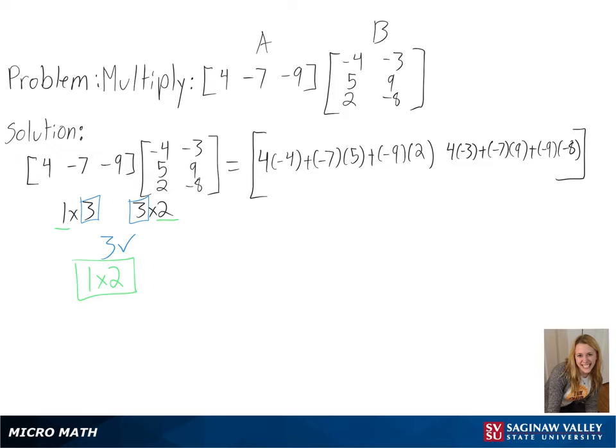Since all of our rows and columns have been multiplied, now we can start simplifying. We will begin with multiplying everything out, and then we can add all of our numbers. And with that, we have solved matrix AB.